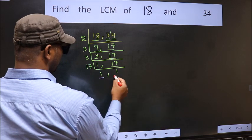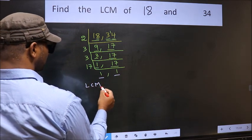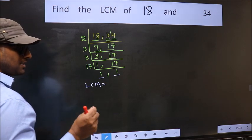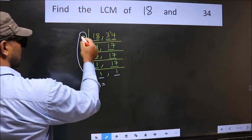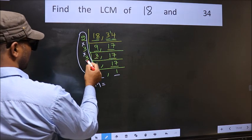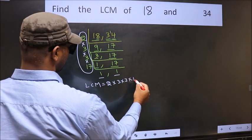Now we got 1 in both the places. So our LCM is the product of these numbers. That is 2 into 3 into 3 into 17.